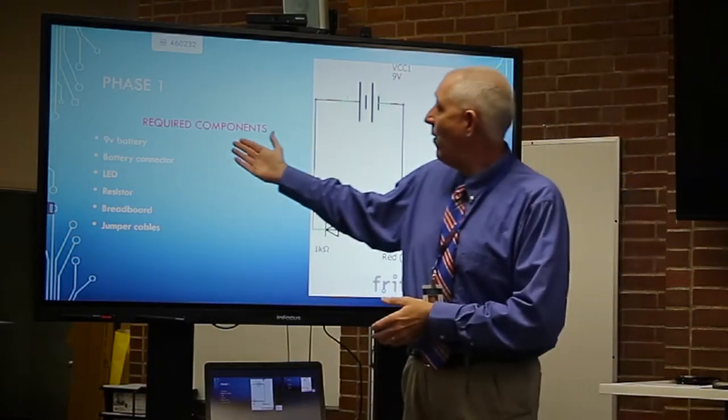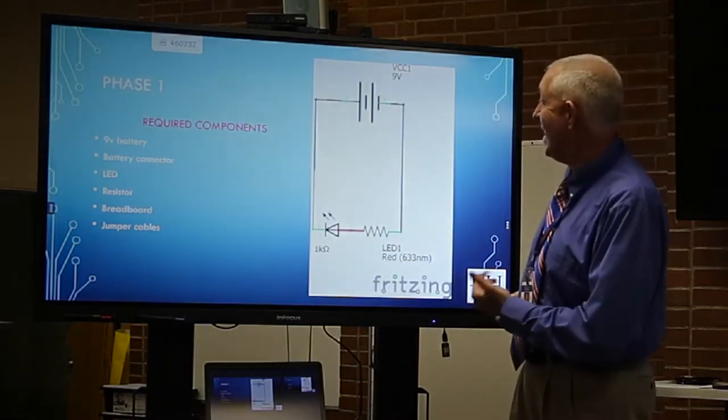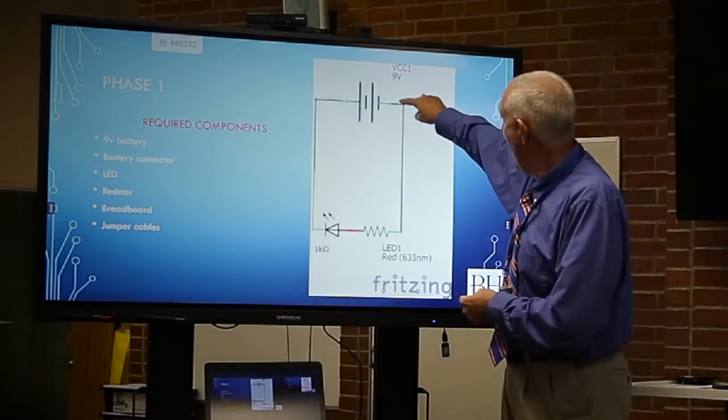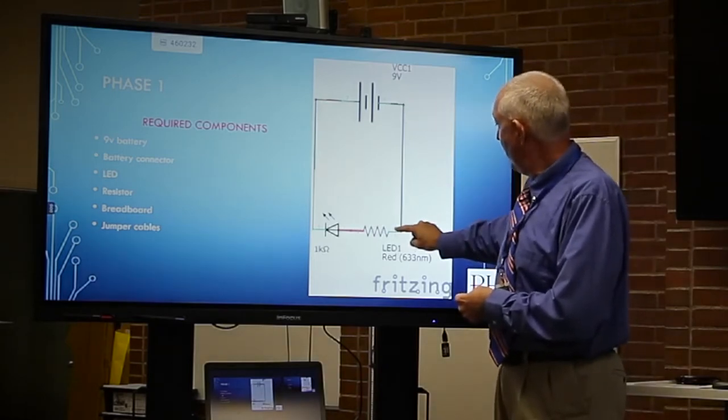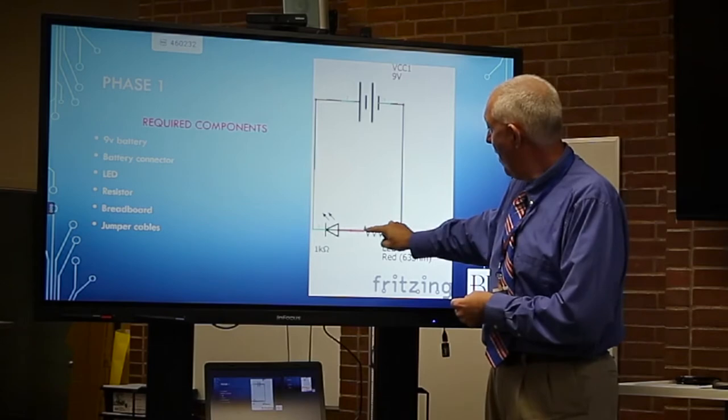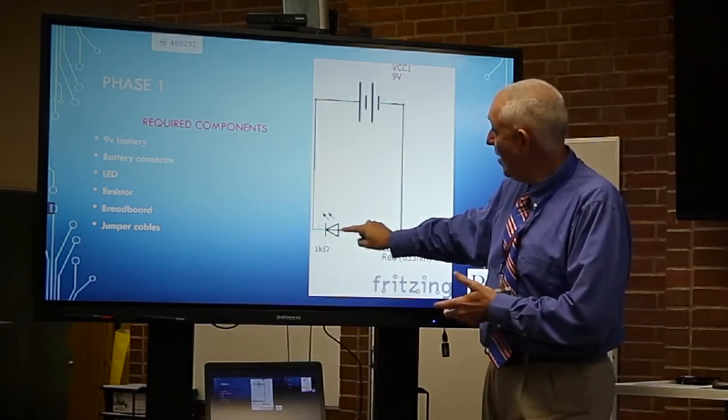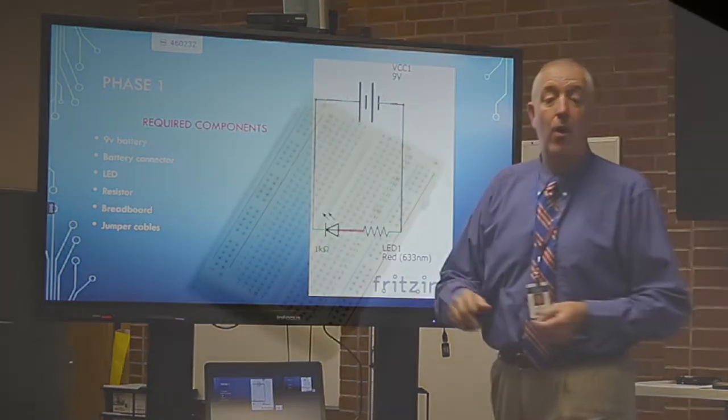We're going to use the battery, battery connector, the LED, the breadboard, resistor, and jumper cables. You can see our path as we go from the battery to the resistor and the end of the resistor to the positive of the LED, the long leg, and shoot all around.